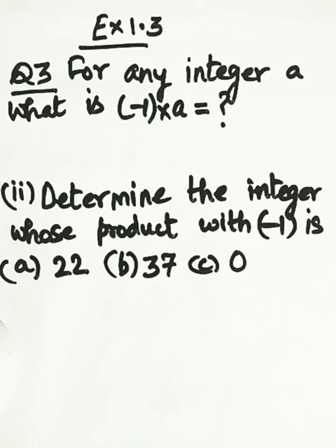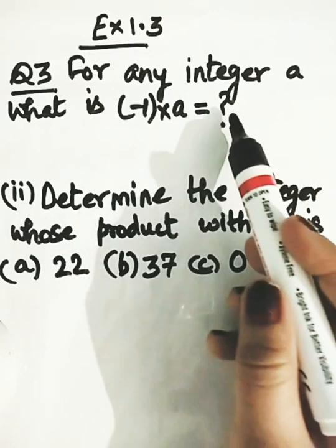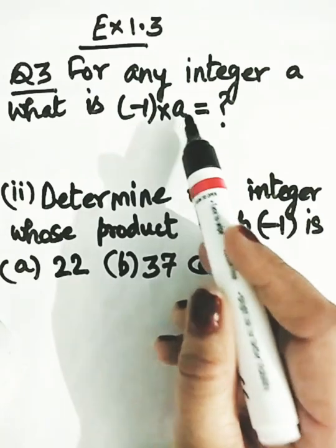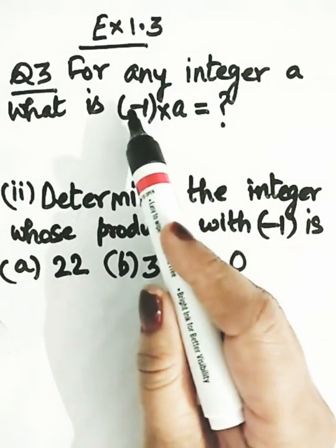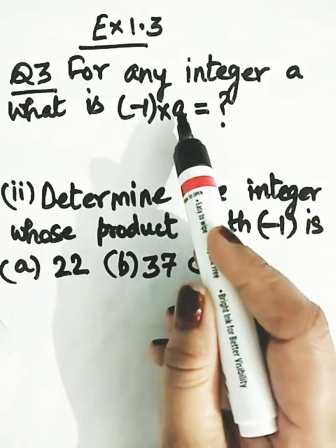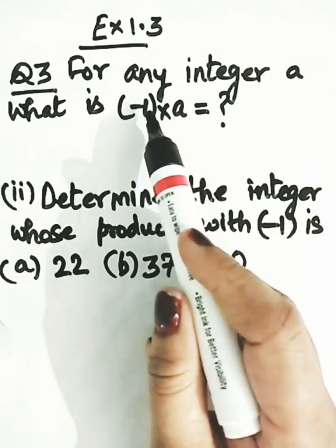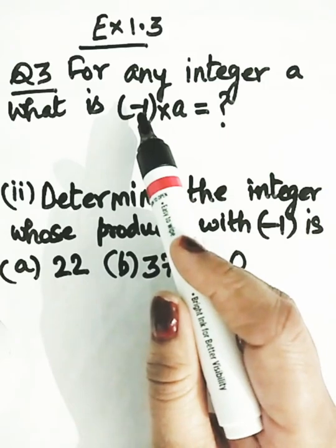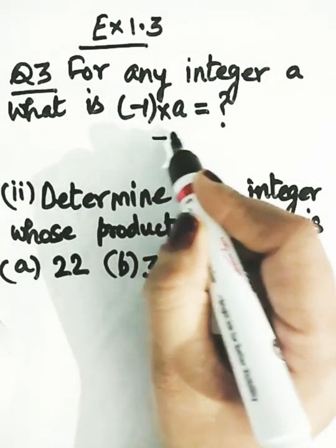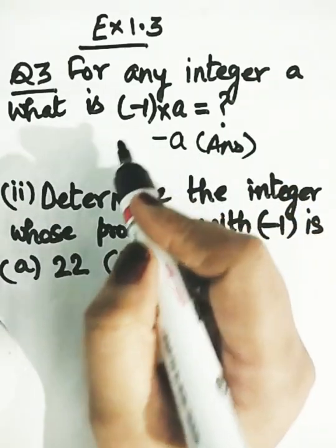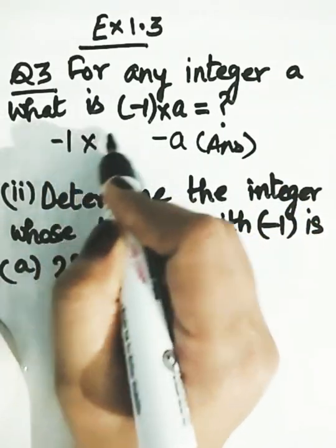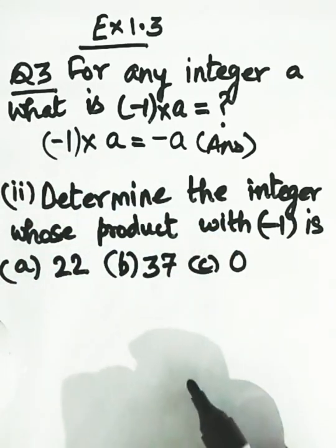Let us discuss exercise 1.3 question number 3. This is a very simple one. For any integer a, what is the product of minus 1 into a? You know that if you multiply any integer by minus 1, the answer is minus a. So minus 1 into a gives you negative a.